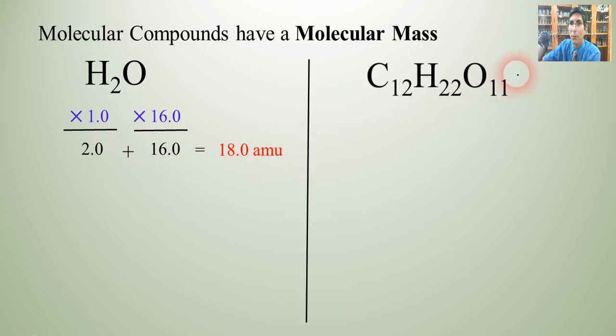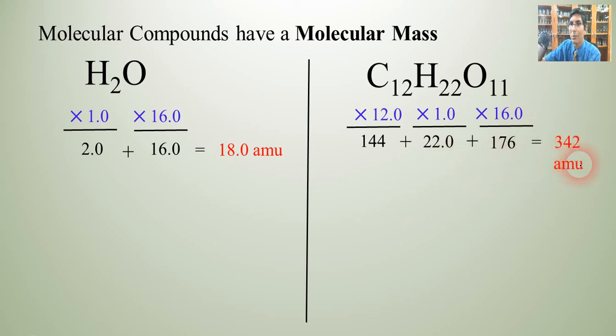Do the same thing for sucrose, for sugar. It's a much more complex molecule but it works the same way. We take the 12 carbons and multiply that by 12.0, its atomic mass and you get 144. Hydrogen, take the 22 and multiply it by 1.0 and we get 22.0. And then the same thing for oxygen, we get 176. You add these together and we get 342 AMU.